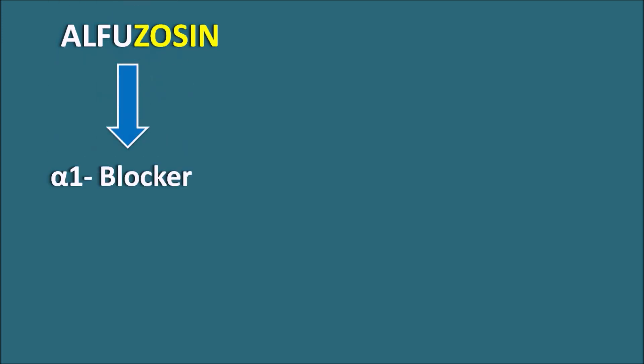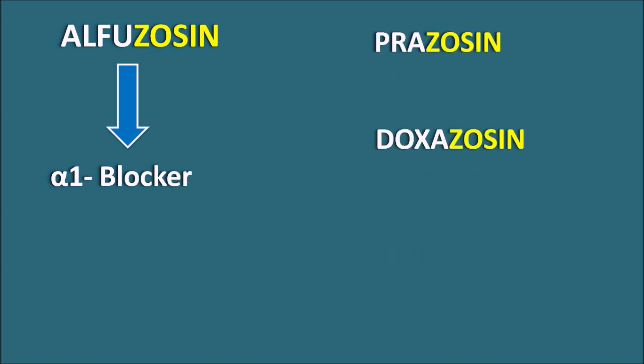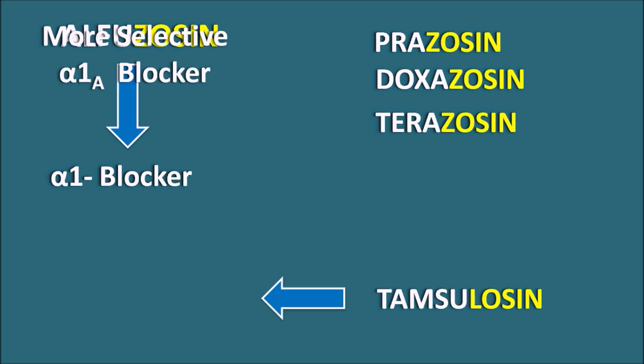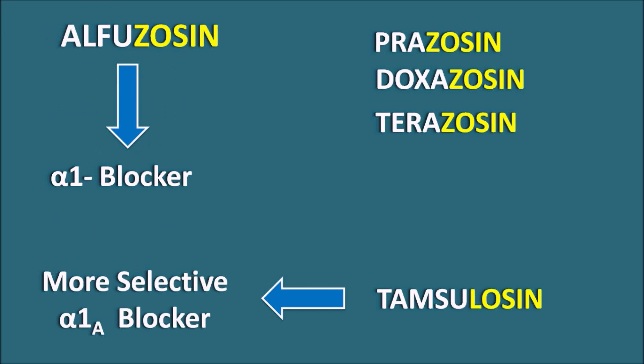What is this drug? The suffix '-zosin' indicates Alfuzosin is an alpha-1 blocker. We have a few other drugs like Prazosin, Doxazosin, and Terazosin — all ending with the same suffix '-zosin,' indicating they belong to the category of alpha-1 blockers. We also have Tamsulosin, which is somewhat more selective towards the alpha-1A receptors, making it a more selective alpha-1A blocker.